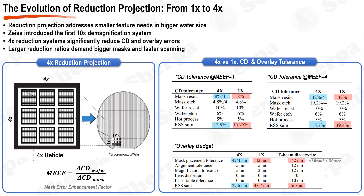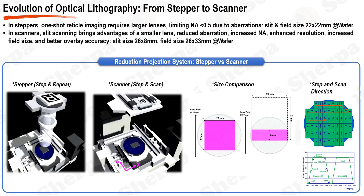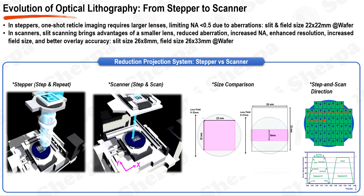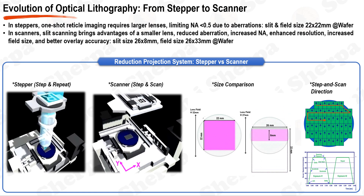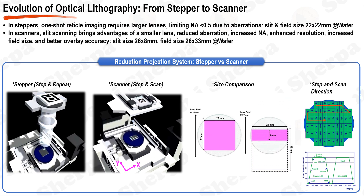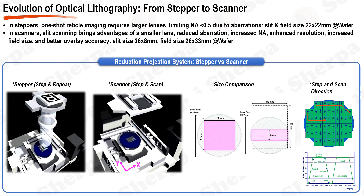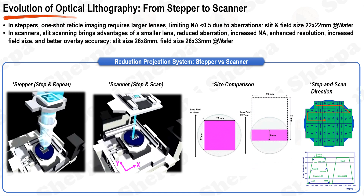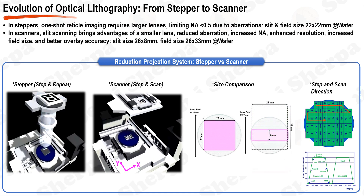However, a high reduction ratio is desirable for CD and overlay control, but comes with challenges. A greater reduction ratio necessitates a larger mask, and to maintain the same imaging size on the wafer, there's a need for extended and faster scanning, which comes with a hefty price tag. Initially, the industry relied on step-and-repeat photolithography, or the stepper. This method operates similarly to a camera, capturing an image from the reticle and imprinting it onto the wafer. However, the stepper's lens must be considerably larger due to the expansive reticle area it needs to capture, making it more susceptible to lens aberrations.